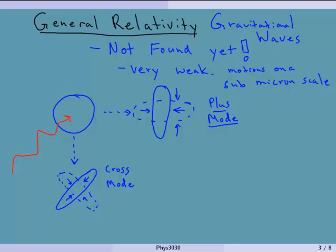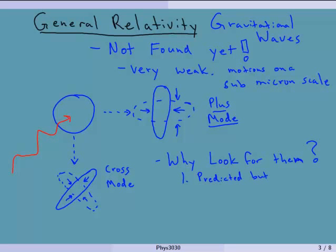Why look for gravitational waves? This is always the funding agency's question. Number one: they're predicted but not found. It's sort of like 'why climb the mountain? Because it's there.' Also, we want to corroborate general relativity. It's really the only prediction of general relativity that hasn't been tested, so we want to put that nail in the coffin of questions about general relativity.